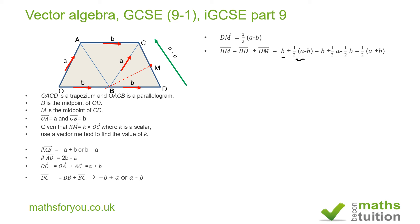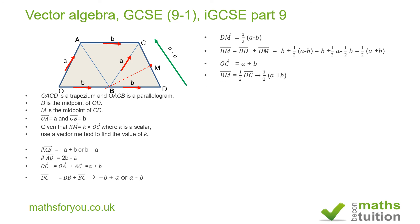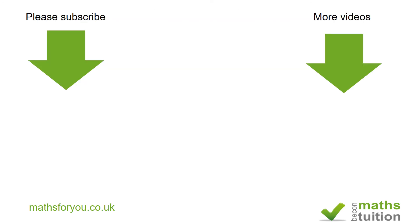Notice that a plus b is the same as OC, which we found earlier. So BM equals one half of a plus b, which equals one half times OC. Therefore the value of k is one half. I hope that all made sense — please subscribe, thanks for watching, and bye bye!